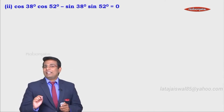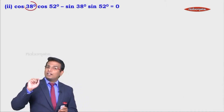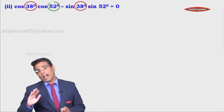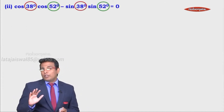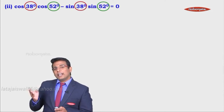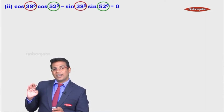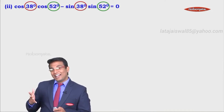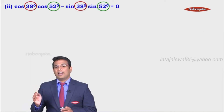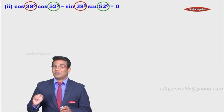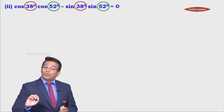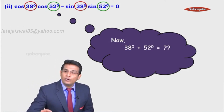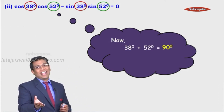Looking at the left hand side, the angles we see are 38 degrees and 52 degrees. Are they standard angles — 0, 30, 45, 60, or 90 degrees? No. That means we cannot use a trigonometric table. So let's consider the sum of these two angles. If we add 38 degrees and 52 degrees, how much do we get? We get 90.